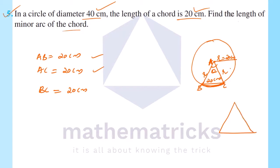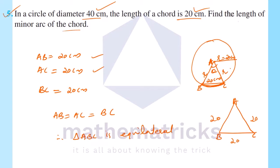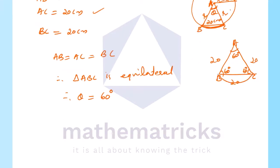We form triangle ABC where A and C are endpoints of the chord and B is the center, so AB = AC = BC = 20 cm — all three sides equal. Therefore triangle ABC is equilateral, and the angle theta at the center equals 60 degrees.